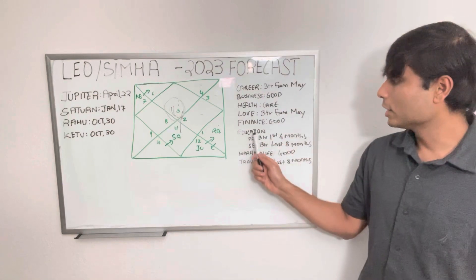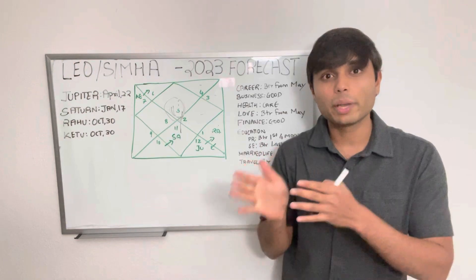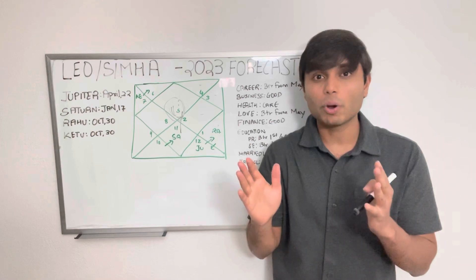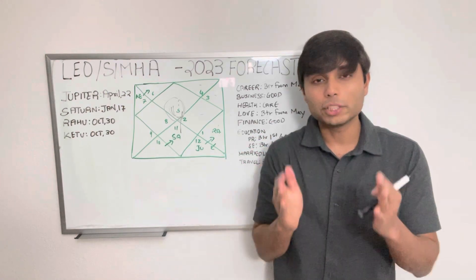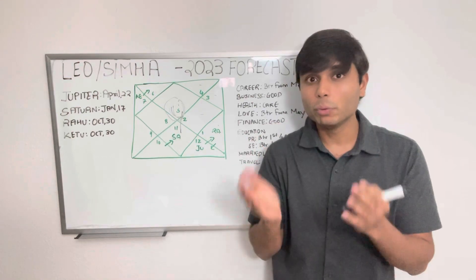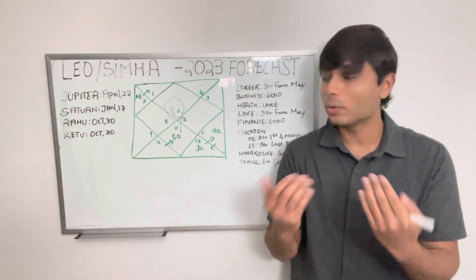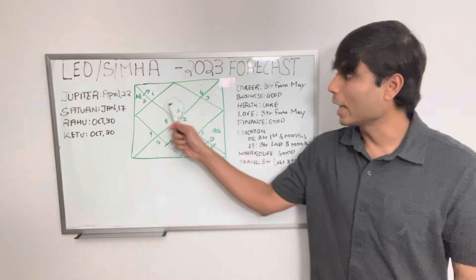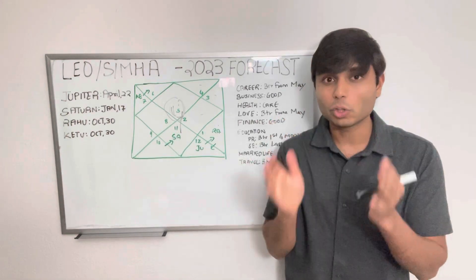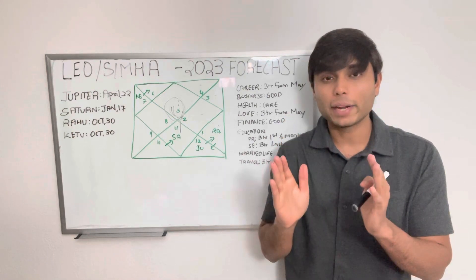If we talk about education, specifically primary education such as those students pursuing bachelor's or high school, then the first four months are looking to be strong and supportive to achieve good academic progress. But in the last eight months, you will need to study really hard to be able to achieve any desired results because Saturn will aspect your fourth house, which will fall on enemy sign Scorpio. So students will need to put in a lot of hard work and effort in the last eight months.